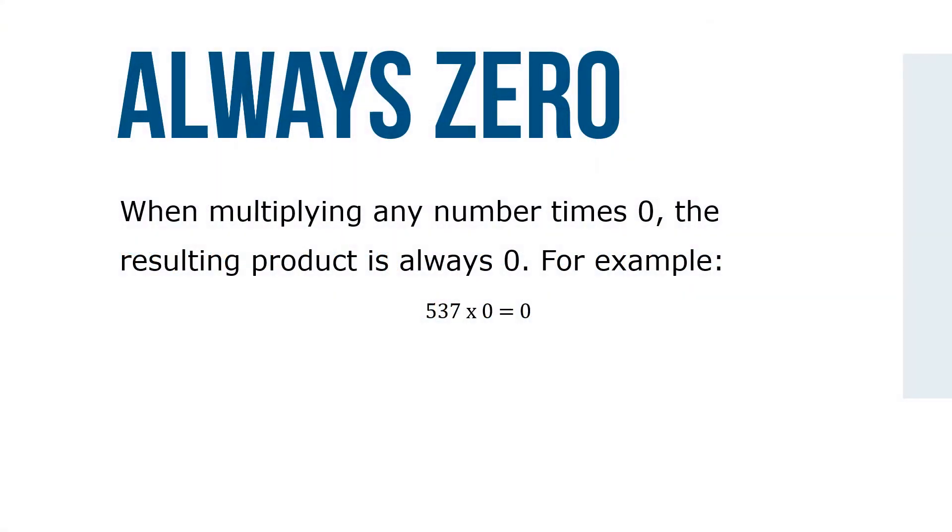When multiplying any number times zero, the resulting product will always be zero. For example, 537 times zero is zero.